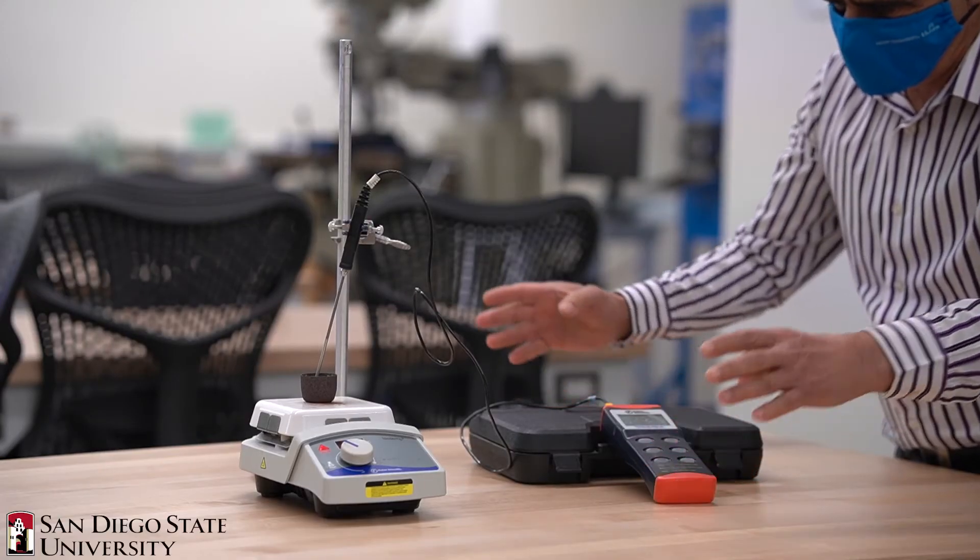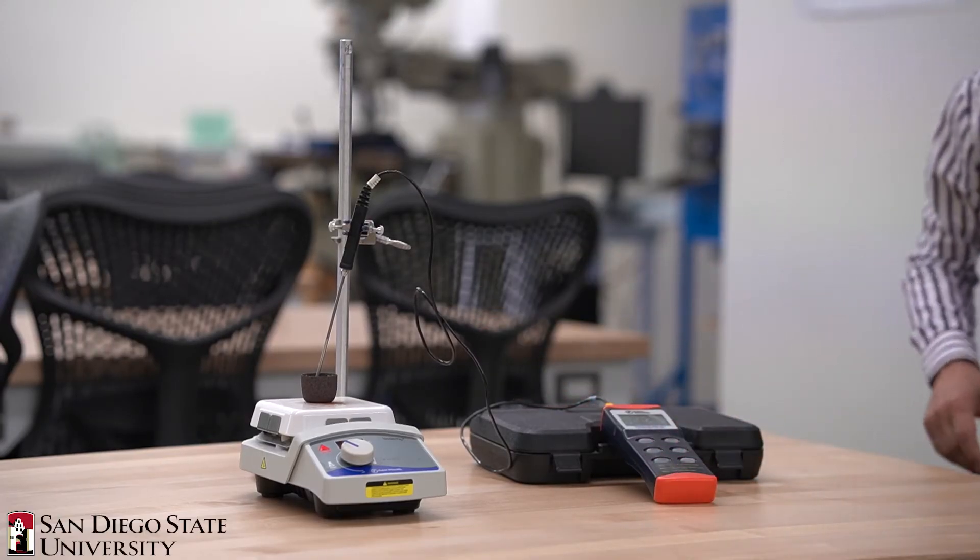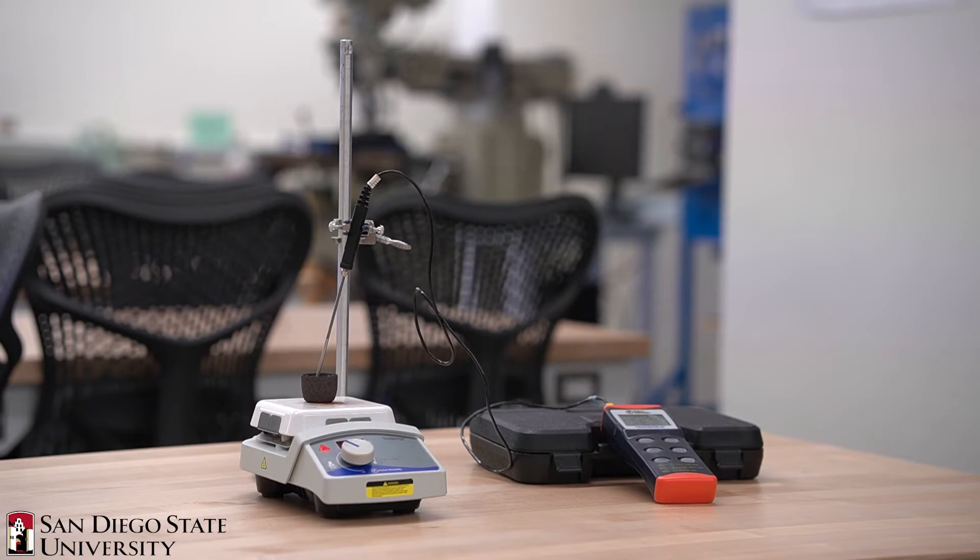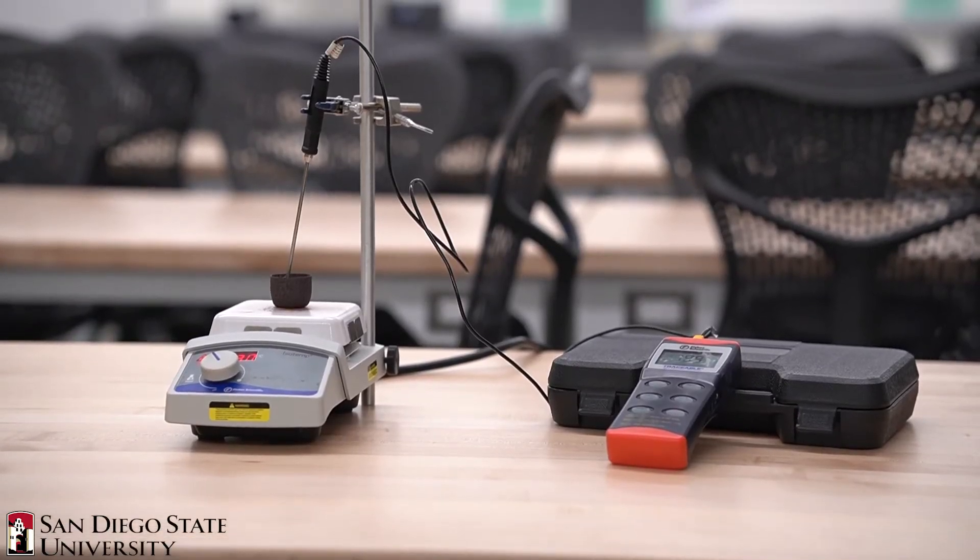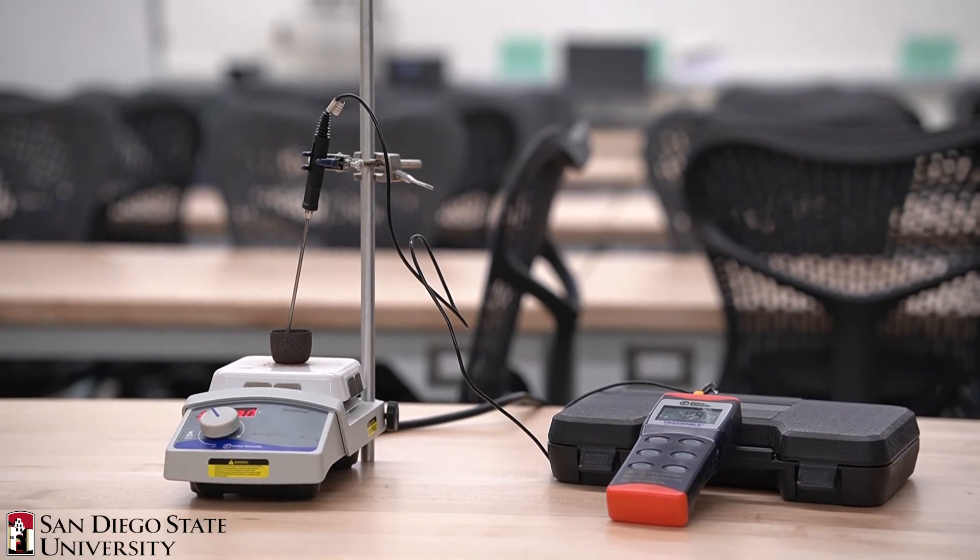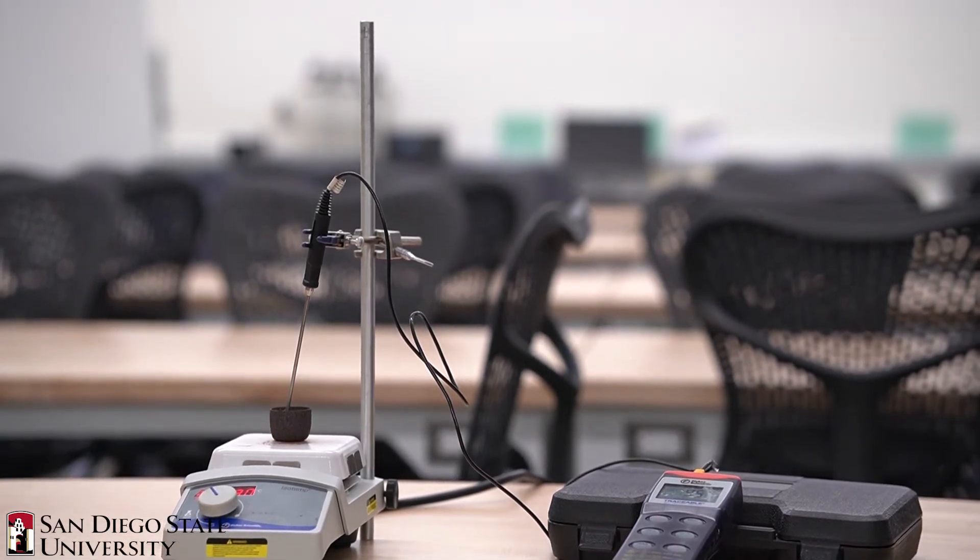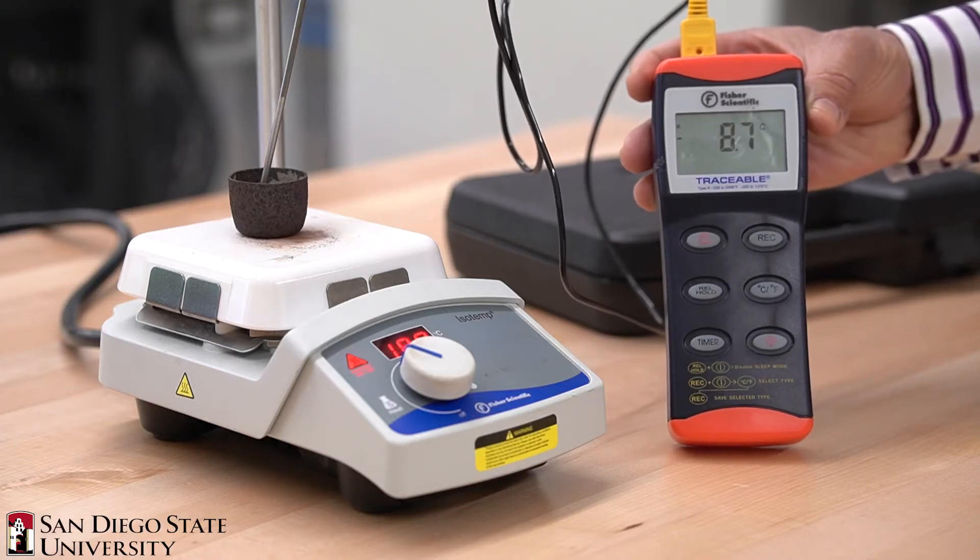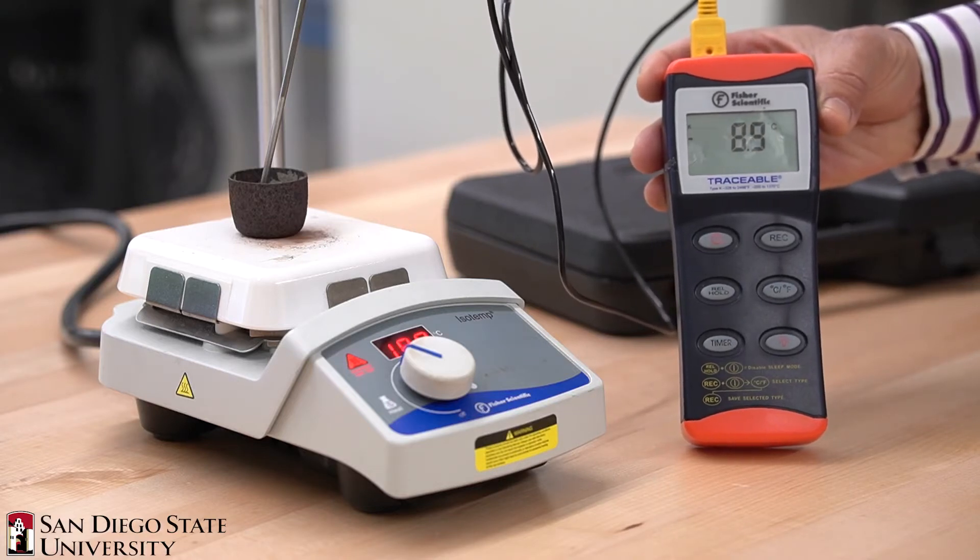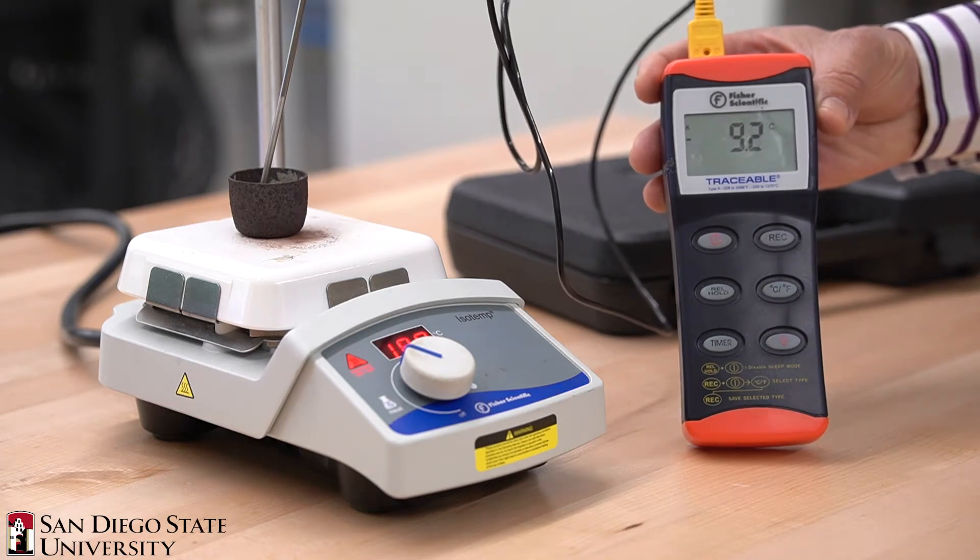Students construct phase diagrams for a tin-lead binary alloy. Students utilize a hot plate to heat a steel crucible containing the tin-lead alloy until the alloy is molten. The molten alloy is then allowed to cool and students measure the temperature with a thermocouple and calibrated digital display. The experiment is repeated for various alloy compositions.